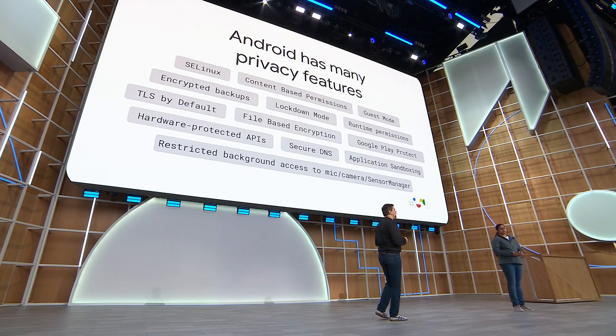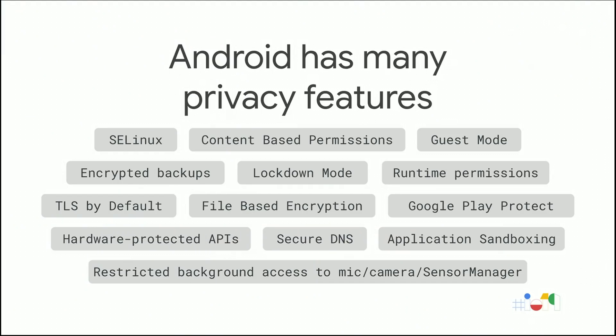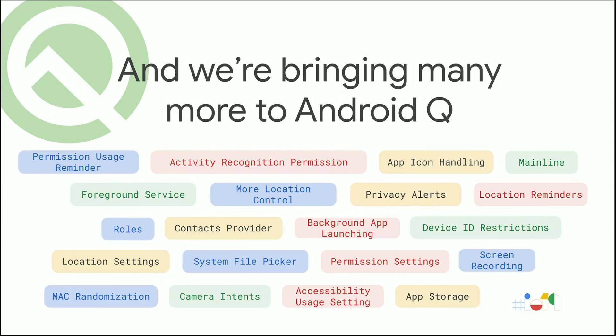Over the years, Android has matured. We've added a wide range of features to protect our users, like file-based encryption, runtime permissions, lockdown mode, Google Play Protect, and many more. On Android, we embrace privacy as a way to innovate. And Android has always been designed with security and privacy at its core. In Android Q, we wanted to go farther.